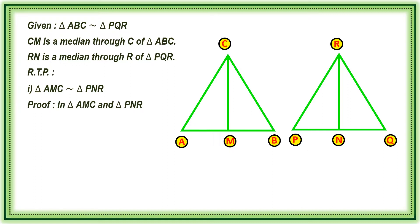Proof: In triangle AMC and triangle PNR, AC by PR, first and third letters in both triangles, is equal to AM by PN, first and second letters in both triangles. And angle A is equal to angle P. So, side angle side property.